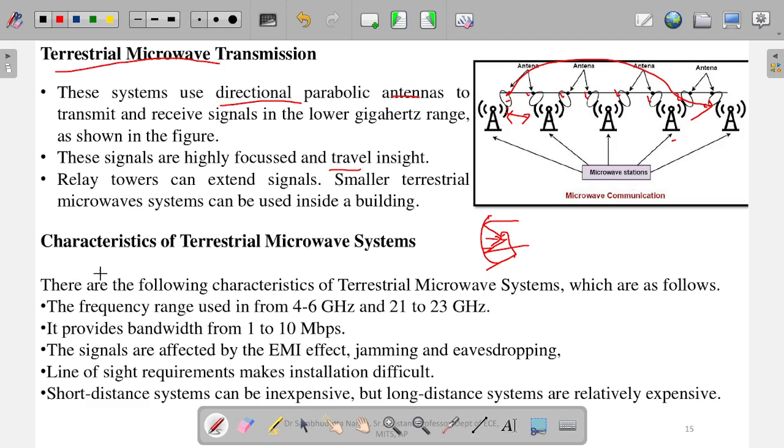What are the characteristics of terrestrial microwave systems? There are following characteristics. First is the frequency range is 4 to 6 gigahertz and 21 to 23 gigahertz. These are the two frequency bands it is used. It provides maximum bandwidth from 1 to 10 Mbps.